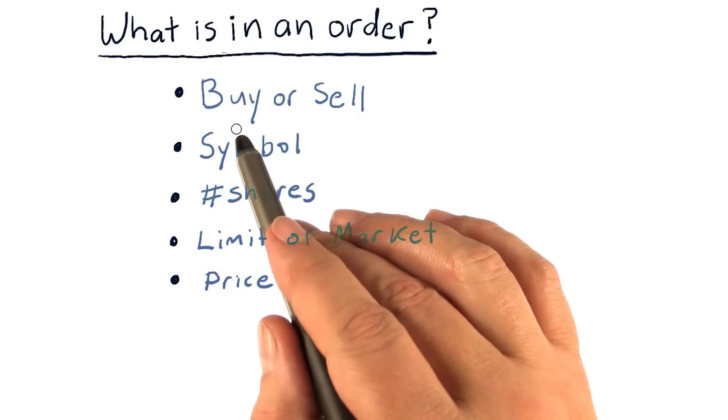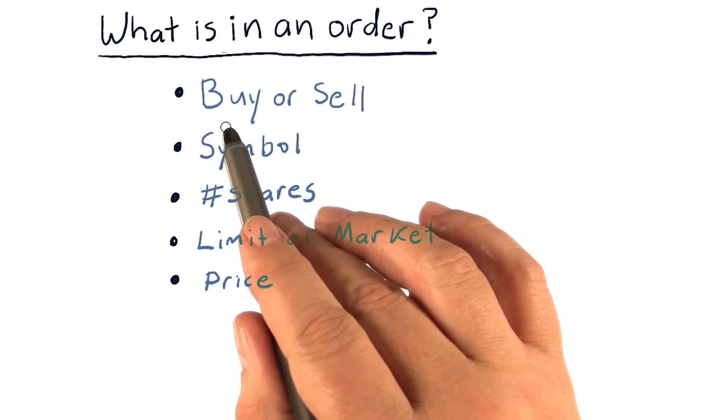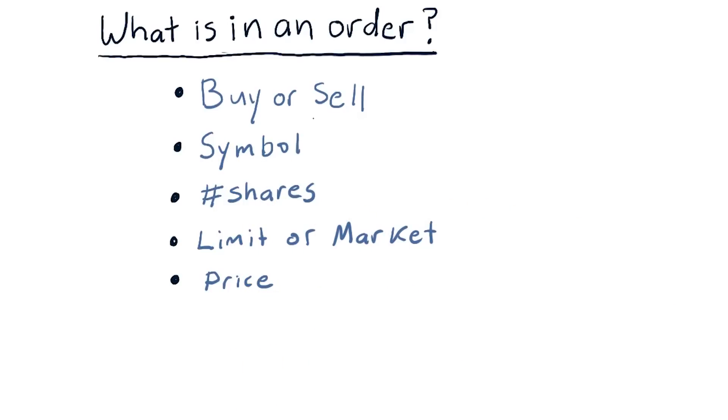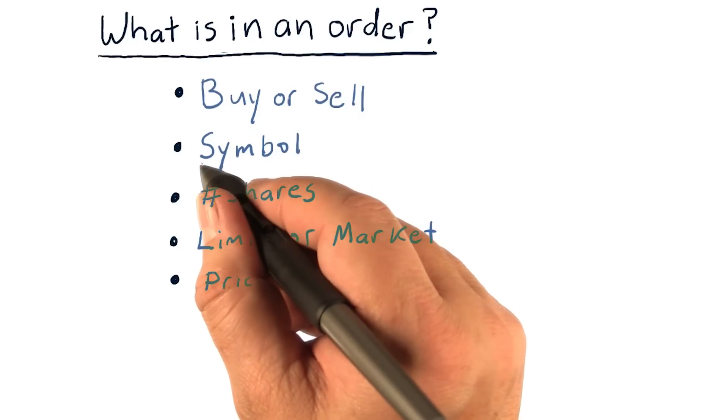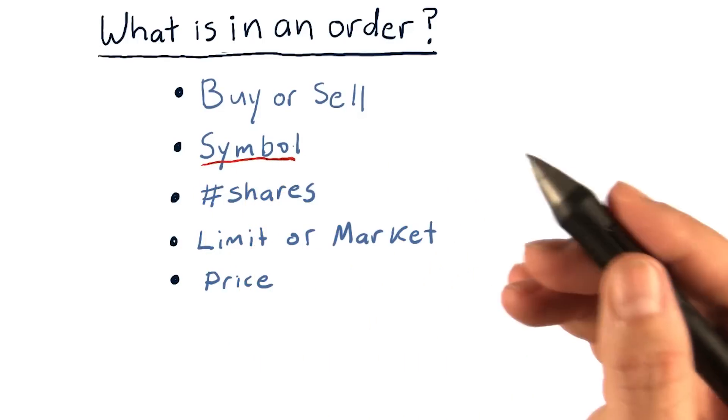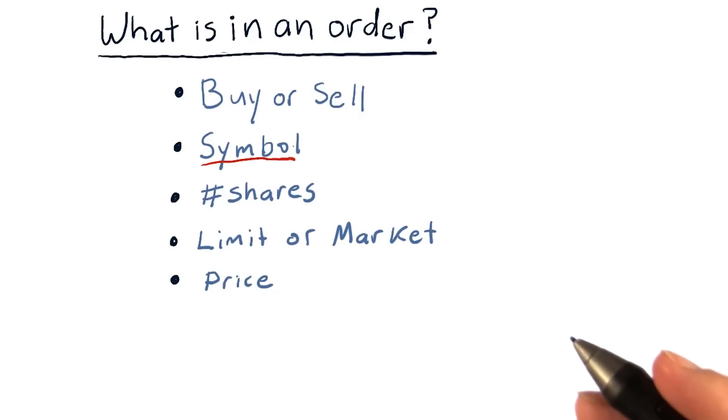First of all, we need to know, are you looking to buy or sell shares of a stock? Next is the symbol. This is an identifier for the stock or perhaps ETF that you want to buy or sell. For instance, IBM or SPLV.